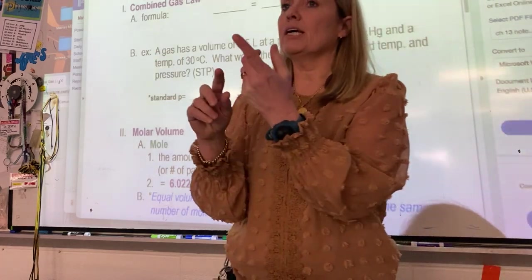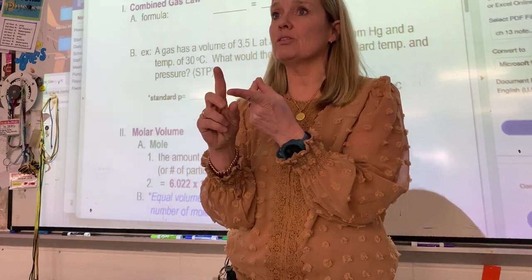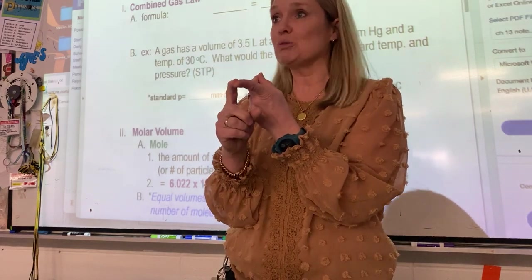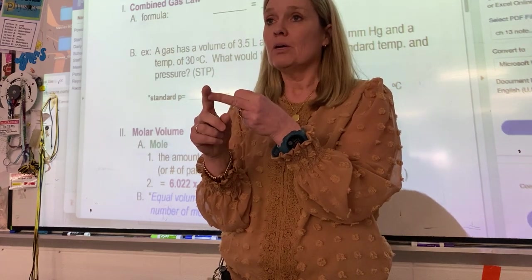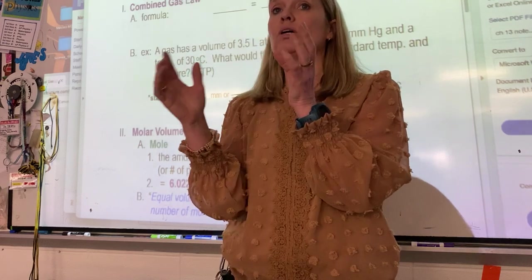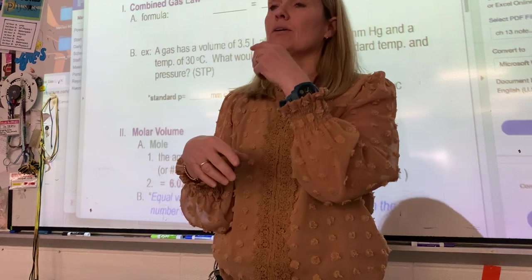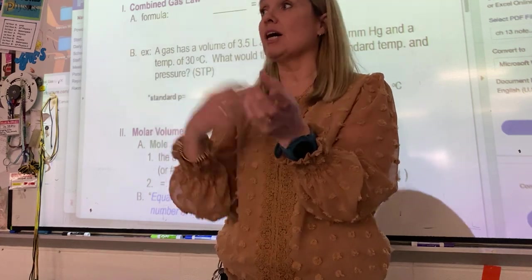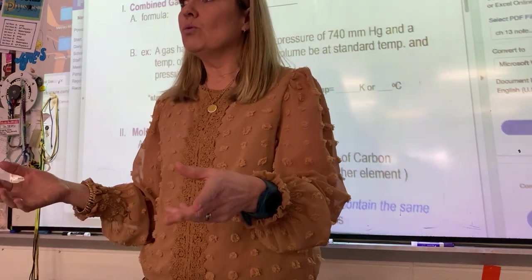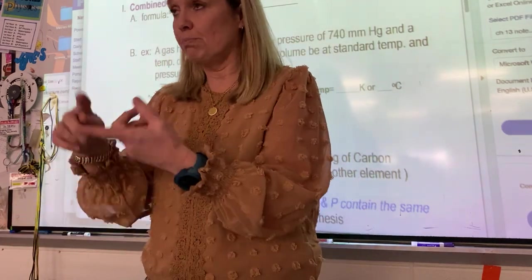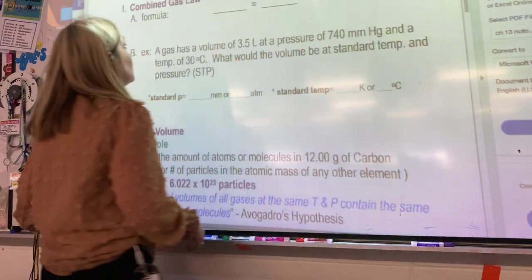We ended up talking about Boyle's and Charles' laws. Boyle's was pressure and volume, not temperature. Charles' law was volume and temperature relationship. Those were if you held one thing constant, correct? For Boyle's you had to hold temperature constant, for Charles you had to hold pressure constant. So what if everything changes? PV and T changes. Why don't we take Charlie and Boyle and put them together?